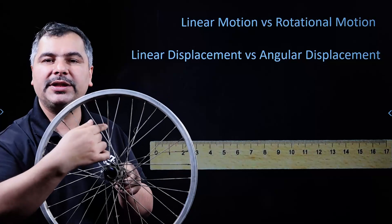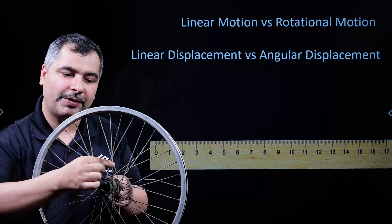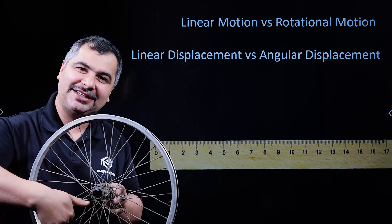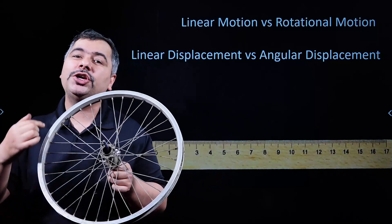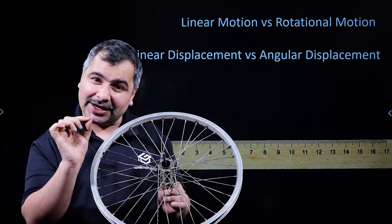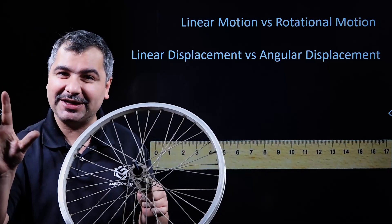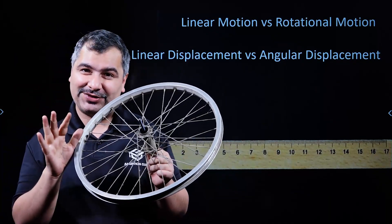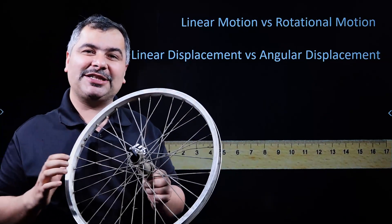How much angle is it? It's 360 degrees. This angle is 360 degrees. Every point, every particle is equally displaced — 360 degrees. So what is the angle? In rotational motion, the body's different parts have different linear displacement. So the whole body's displacement is represented by the common angular displacement.